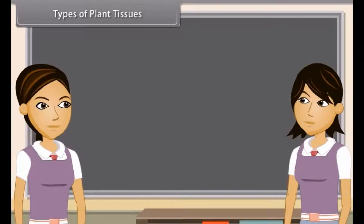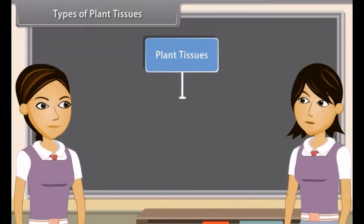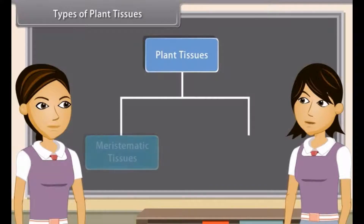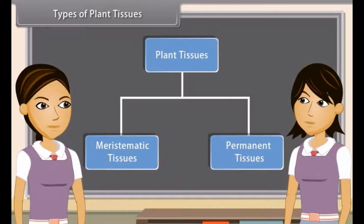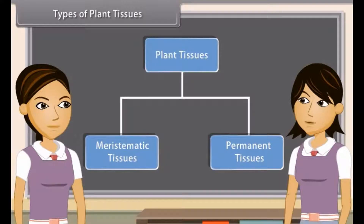On the basis of their dividing capacity, plant tissues are of two types: meristematic and permanent. Those tissues which divide continuously and help in increasing the length and girth of plants are known as meristematic tissues. These are found only in growth regions of plants. While those tissues which are derived from meristematic tissues but have lost the power of division and have attained their definite forms are permanent tissues.